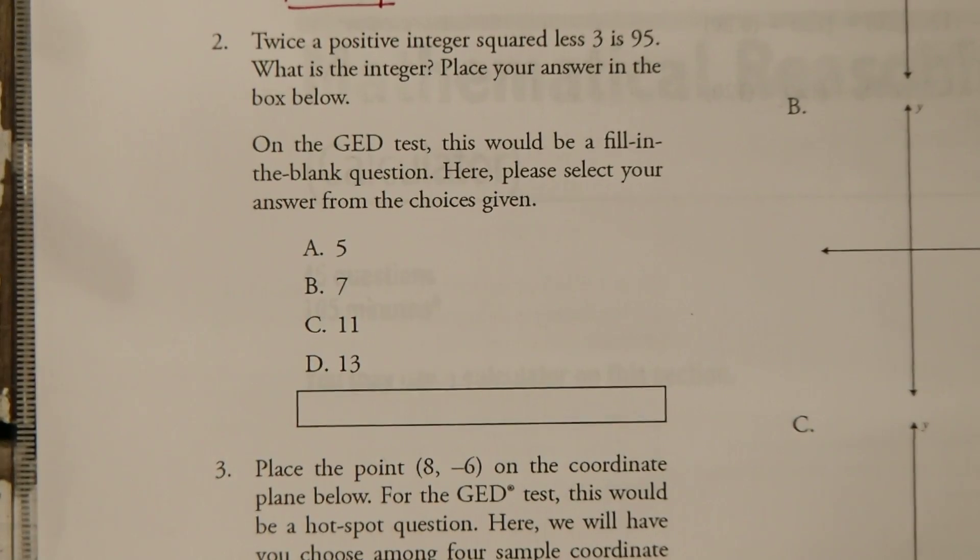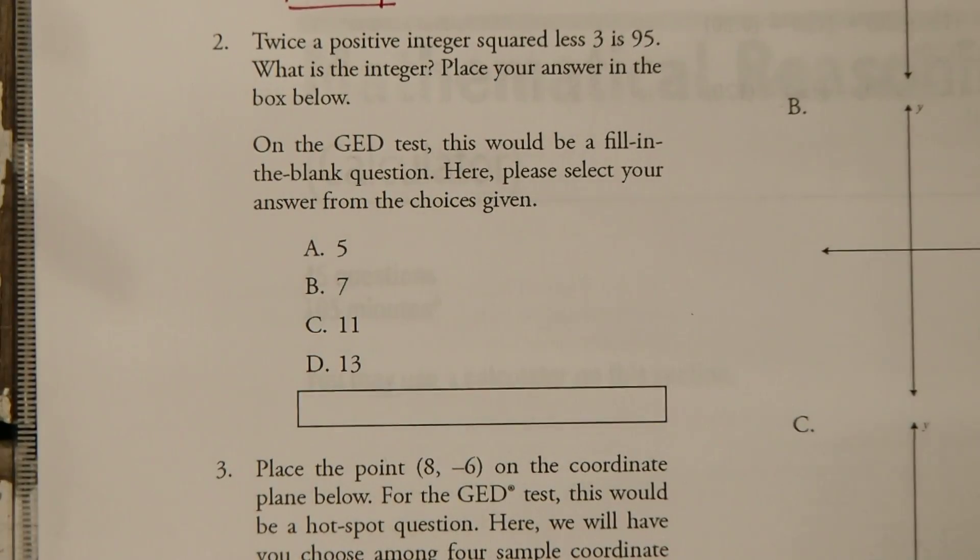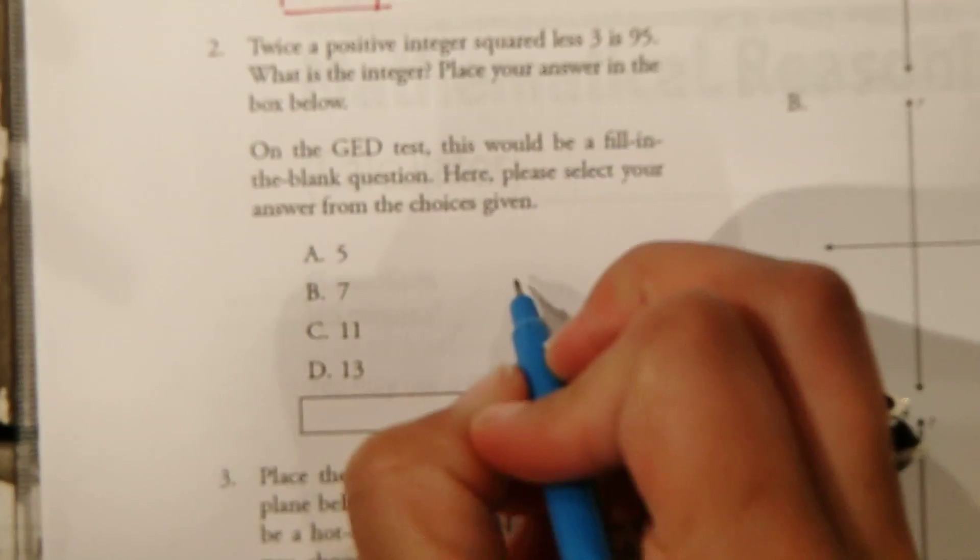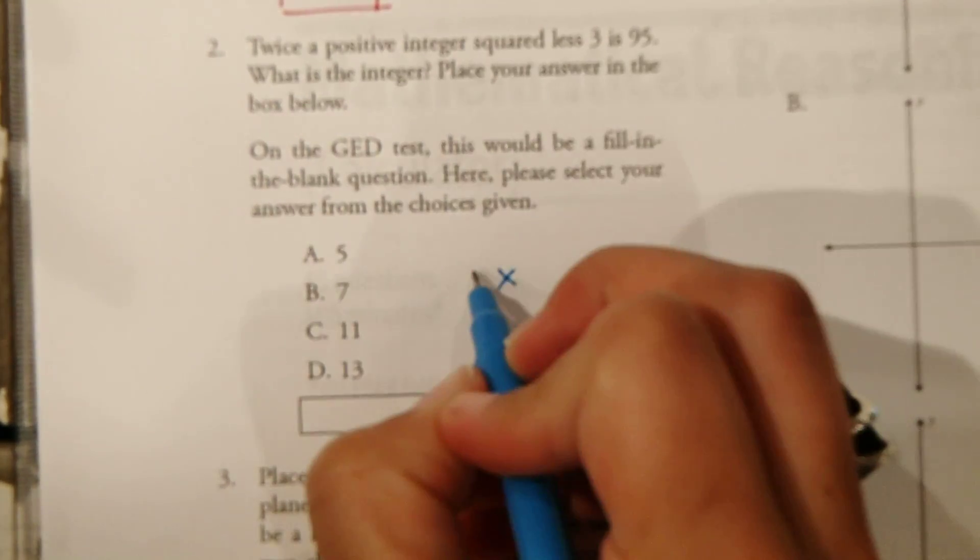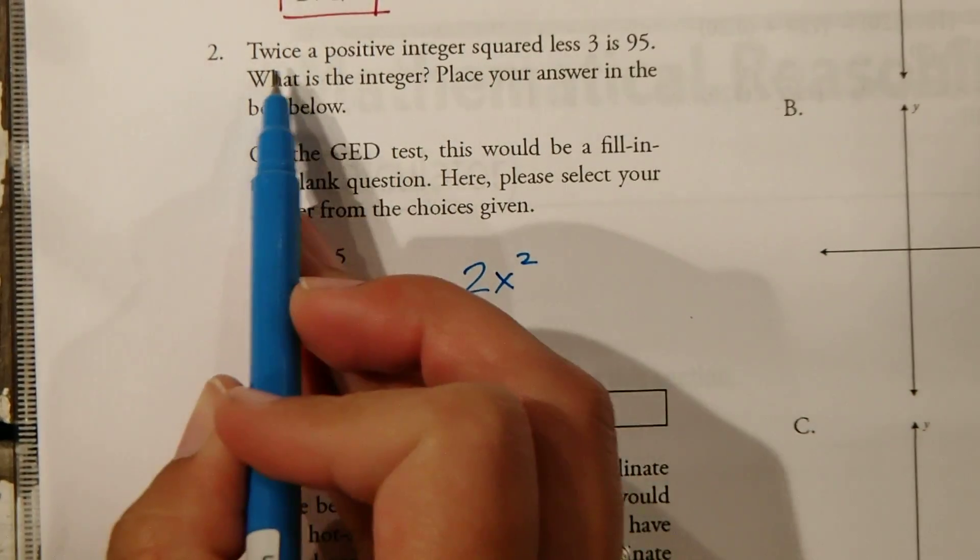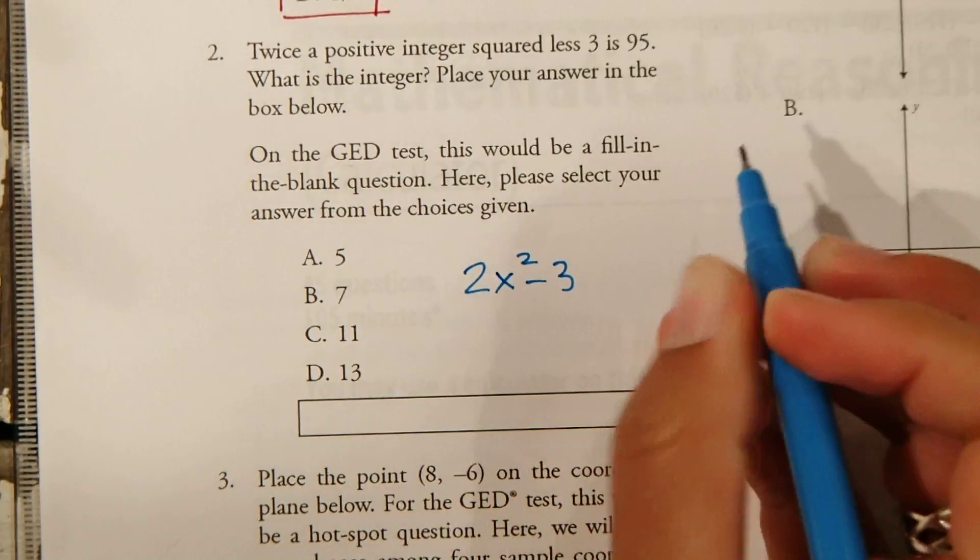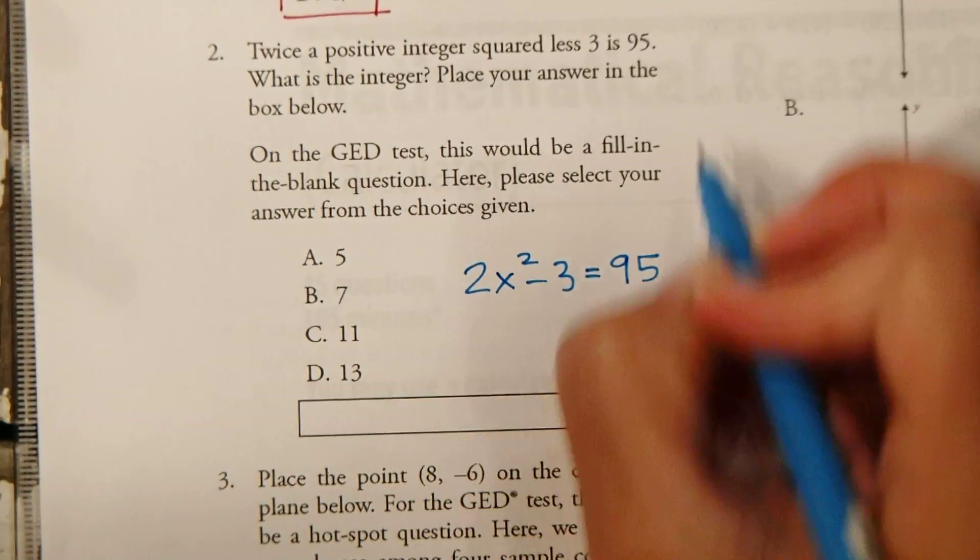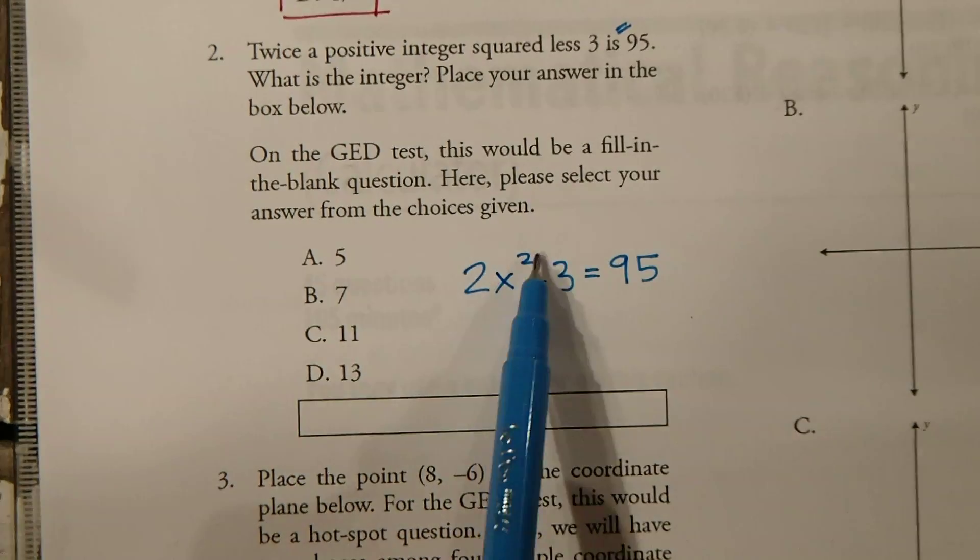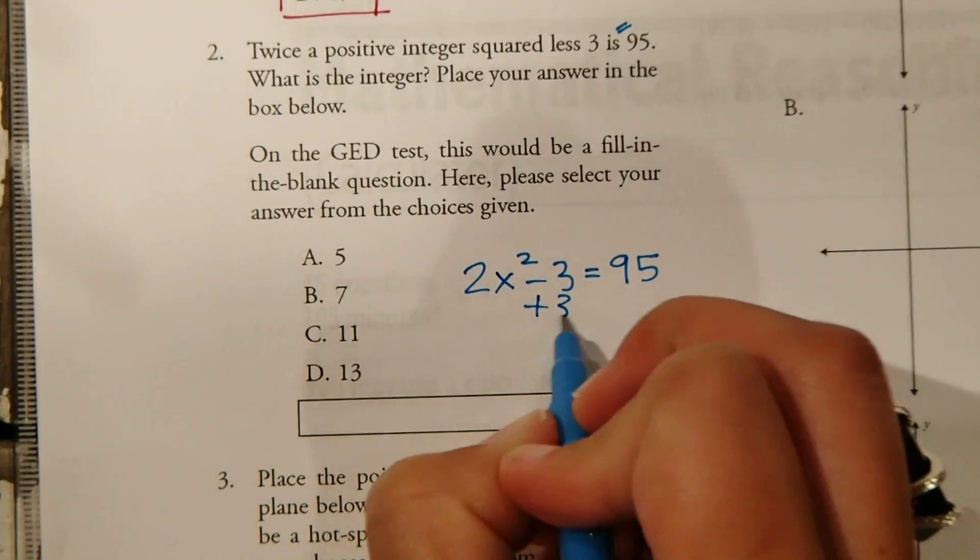All right. Let's look at number 2. Twice a positive integer squared less 3 is 95. Okay, so we need to come up with a formula for what these words are telling us. So if we have a positive integer, we'll just say that's going to be X, because we're looking for whatever number that is. So we'll call that X. So twice a positive integer, that's 2 of them, twice the integer, squared, twice the integer squared, less 3 is 95. Is is the equivalent of the equal sign. So twice a positive integer, 2 times the integer squared, less 3 is 95. Now we can just solve for X.